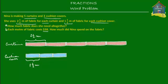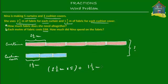Now, how much fabric does she need altogether? That's quite simple. Altogether she needs five times two and a half meters plus three times one and a third meters. From the models here, we can tell straight away that this equals two and a half meters times five plus one and a third meters times three, because she made five units of curtains and three units of cushion covers.